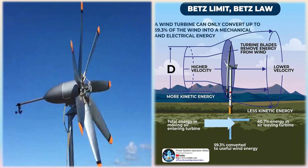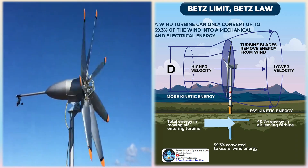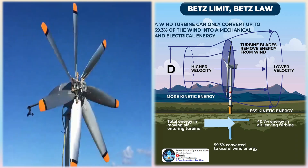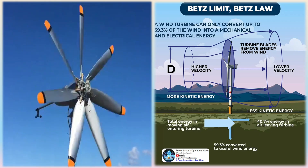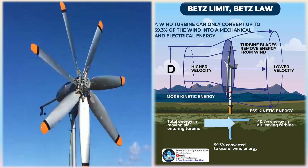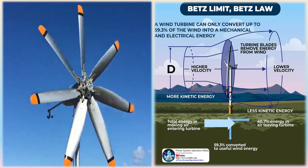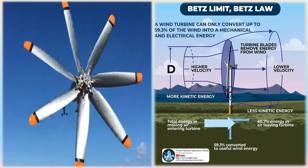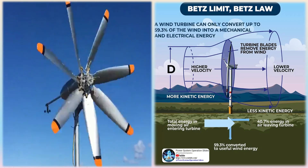In the other extreme case, the wind could pass the rotor without being hindered at all. In this case, we would likewise not have extracted any energy from the wind. We can therefore assume that there must be some way of braking the wind which is in between these two extremes, and is more efficient in converting the energy in the wind to useful mechanical energy.